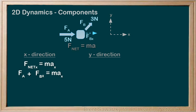Recognizing that FA equals 5 newtons and FBx is 3 cos 45, we get an F net x, or an x-component of our F net, being 7.1 newtons.